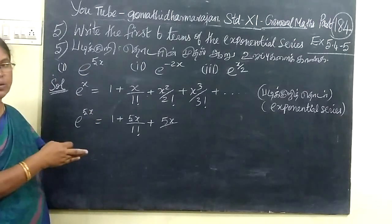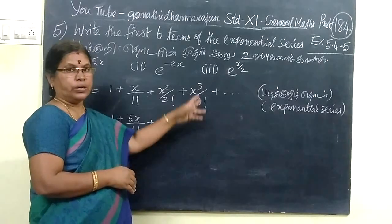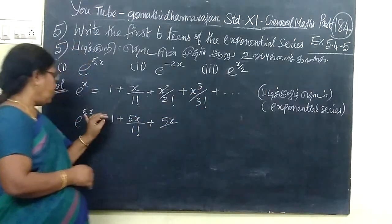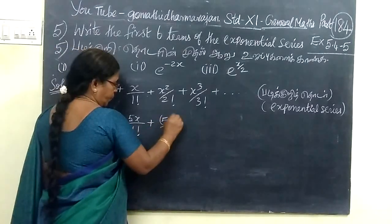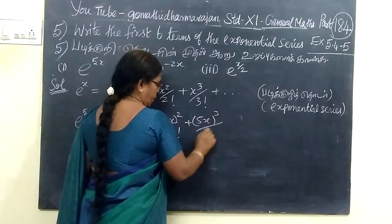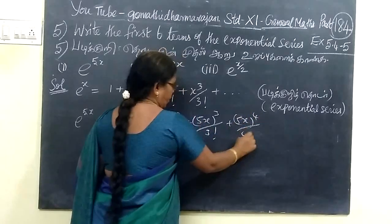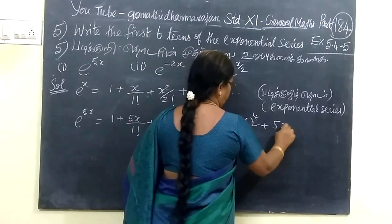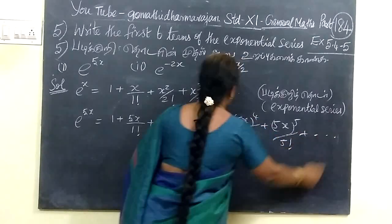We have the exponential series: e^x equals 1 plus x by factorial 1 plus x squared by factorial 2 plus x cubed by factorial 3, and so on. So, for e^(5x), we write 5x by factorial 1, then 5x squared by factorial 2, then 5x cubed by factorial 3, then 5x to the fourth by factorial 4.